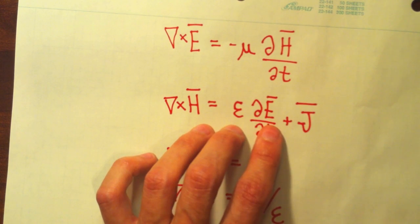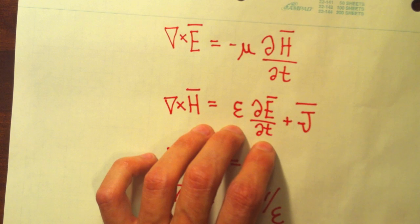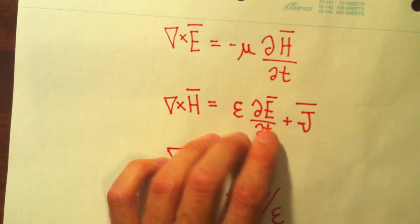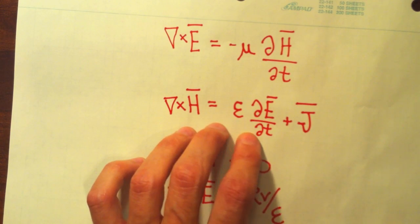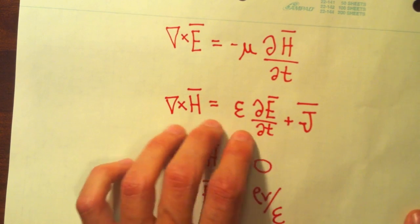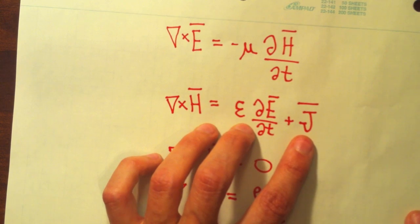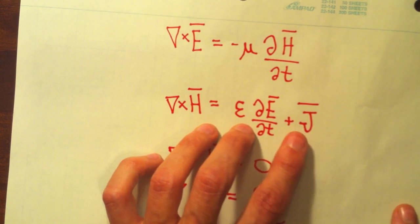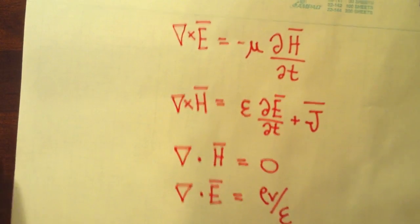Charges separated from each other give rise to a voltage. So this term here is a voltage source term. If you can get a voltage to add up in phase, you will produce radiation. Similarly, if you can get current flowing, you will also produce radiation. So remember that.